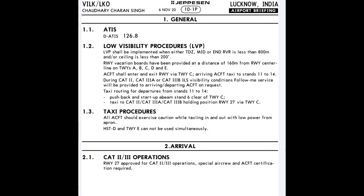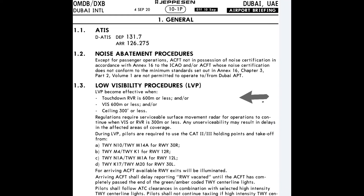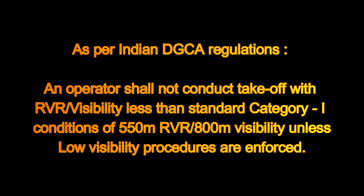At Lucknow, LVP shall be implemented when either touchdown, mid, or end RVR is less than 800 meters and ceiling is less than 200 feet. At Dubai, LVP becomes effective when the touchdown zone RVR is 600 meters or less, visibility is 600 meters or less, and ceiling is 300 feet or less.